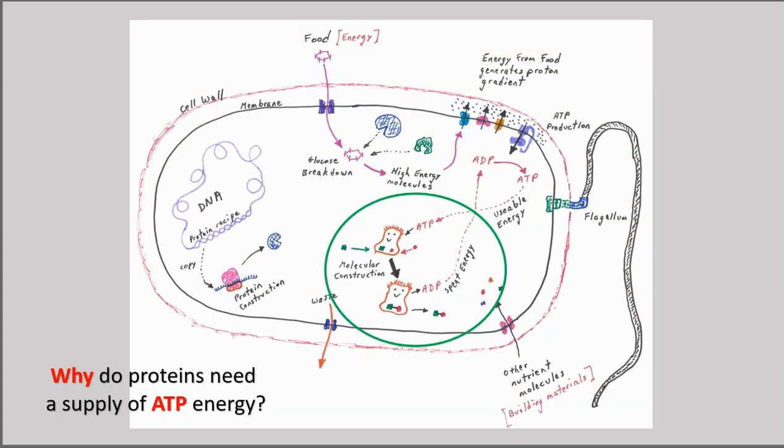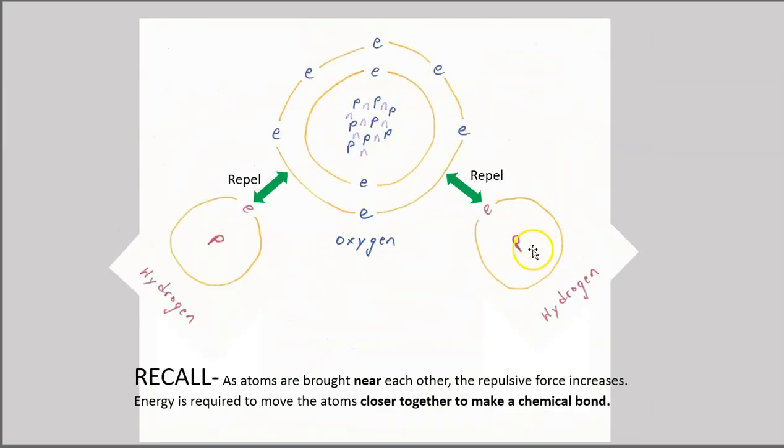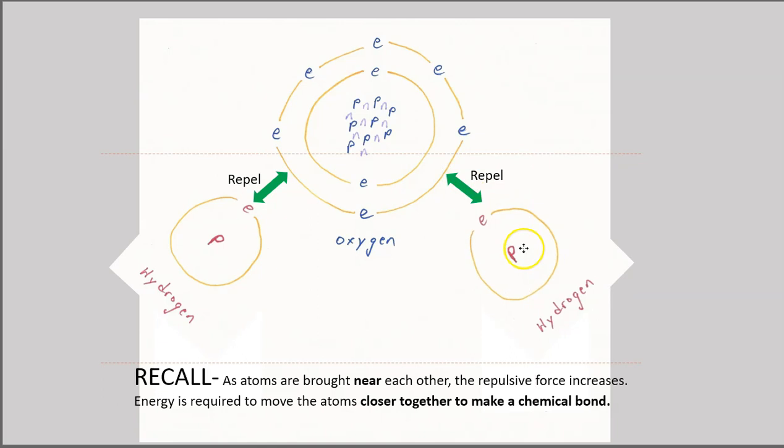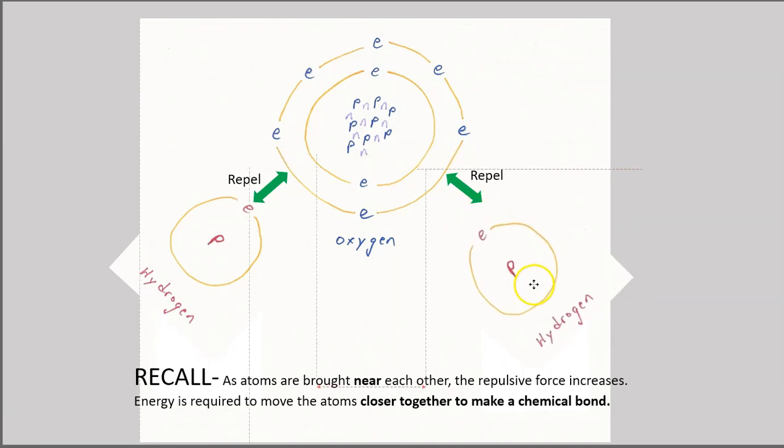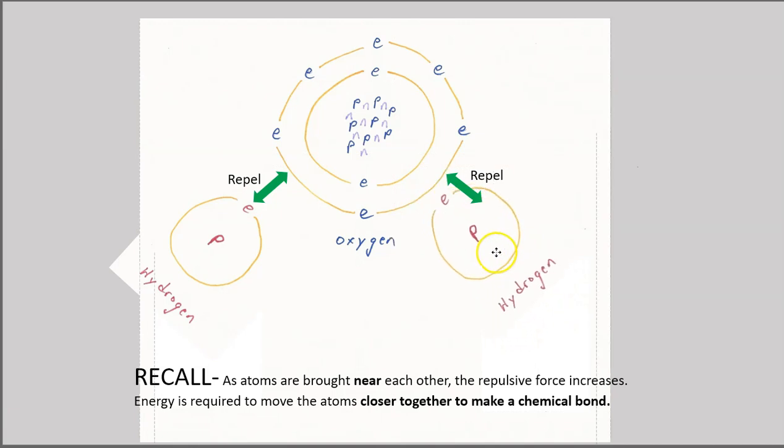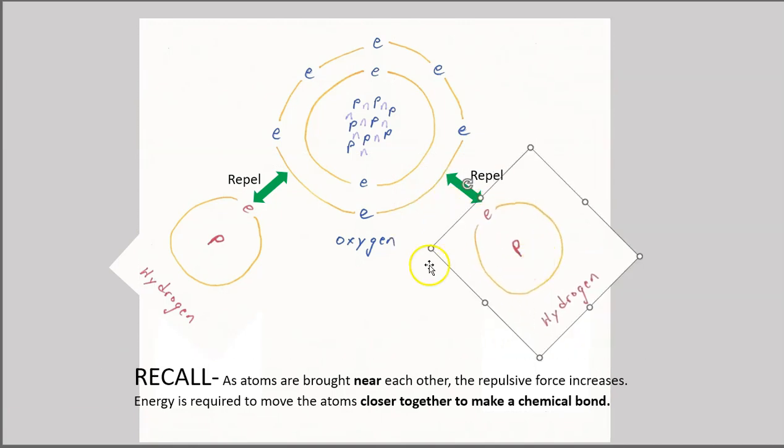So why do proteins need a supply of ATP energy to do their job? We encountered this in a previous lesson. You'll recall that as two atoms are brought close together, the electromagnetic force will repel them. Electrons are negatively charged, so you'll have a repulsive force. It takes energy to push molecules close enough together to form a chemical bond.